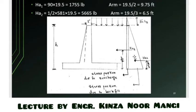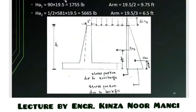To find horizontal forces, we calculate the area of each pressure distribution. For the rectangular surcharge portion: H1 = 90 × 19.5 = 1755 lb/ft. For the triangular backfill portion: H2 = (1/2) × 581 × 19.5 = 5665 lb/ft. These represent the horizontal forces due to surcharge and backfill respectively.